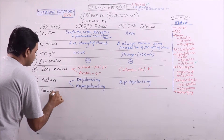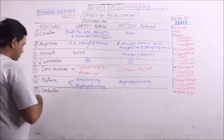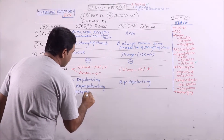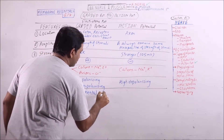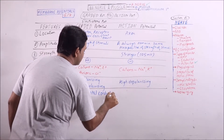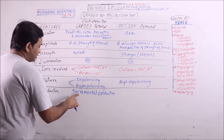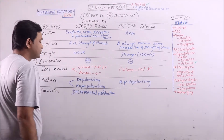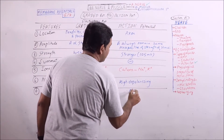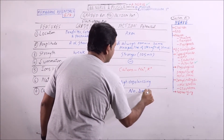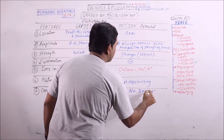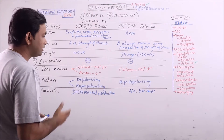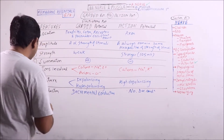Conduction. During conduction, a very important phenomenon of decremental conduction is observed in graded potential — that is, the strength of the graded potential will decrease with time and distance. In action potential, there is no decremental conduction; their amplitude, strength, and shape always remain the same.